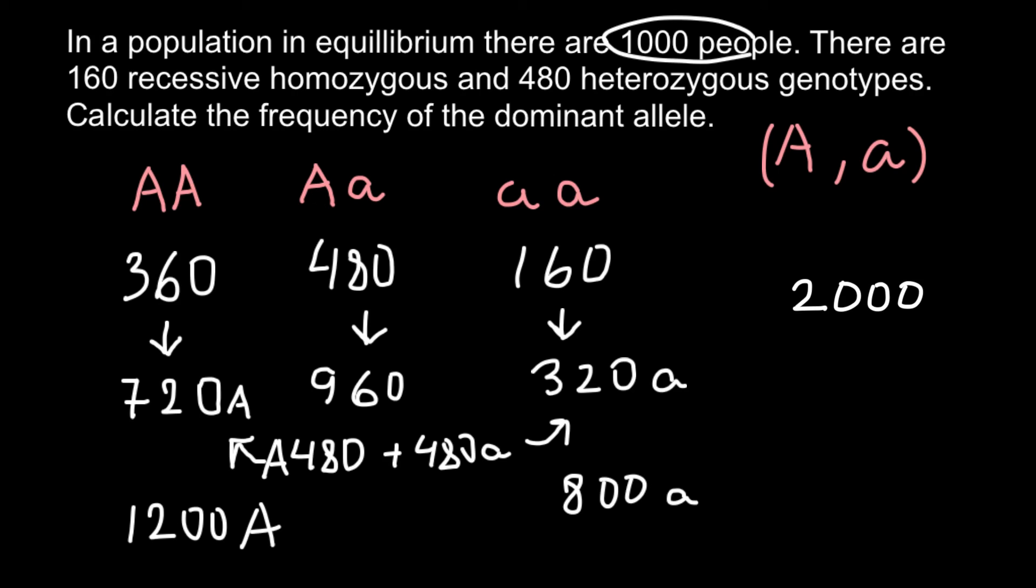This is very easy. The number of dominant alleles is 1200. So we divide 1200 by 2000, and the answer would be 0.6. This can be an answer, but if you need an answer in percentage form, we multiply 0.6 by 100, and the answer would be 60%. This is our answer today.